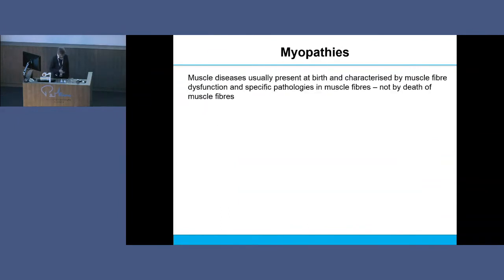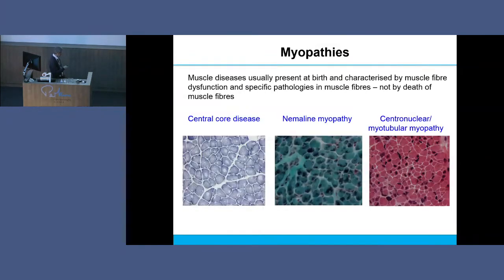The other group are called myopathies, frequently called congenital myopathies, meaning they're present at birth - so as soon as the baby is born they're affected. Myopathies are characterized by muscle fiber dysfunction: the fibers don't die, they're all there, but they just don't work very well. The easiest abnormality to see is central core disease - if you look at each muscle fiber, there's a pale area in the middle being punched out like an apple corer. The muscle fiber is there, but it's not working properly.